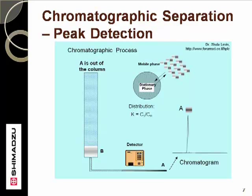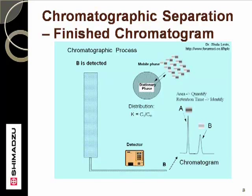The A component exits the column and passes through the detector, where its response is measured and plotted. The B component is still in the column after the A component has already passed through the detector. Now the B component exits the column and is detected. The peak shape shows that the B component has been broadened and shortened by the slow elution as compared to the A component. The area of each peak is typically used to quantify each peak, while the retention time can be used to identify the peaks.